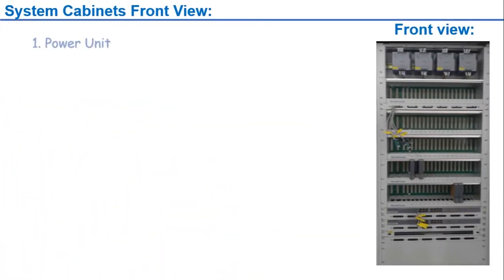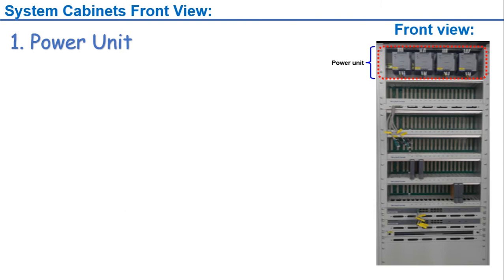Now let's see the detailed overview of the system cabinet internally. As the system cabinet is a double-door panel, we will first look at the front view. The first section in the front view of the system cabinet is the power unit.